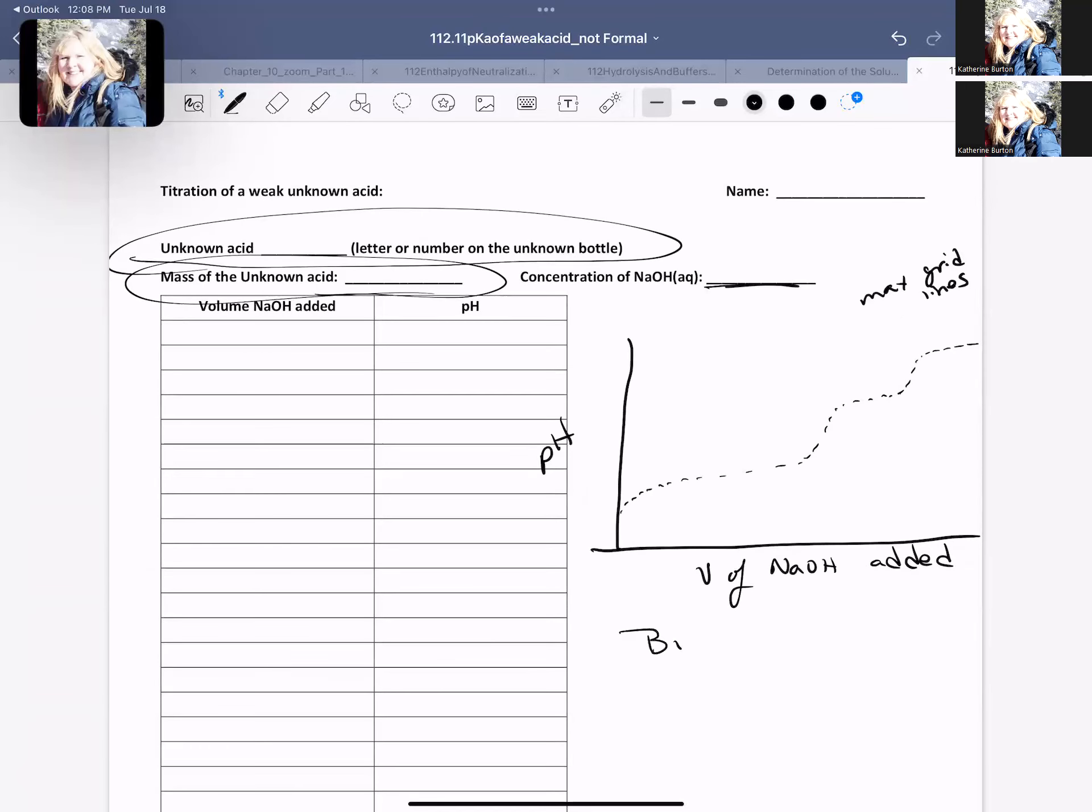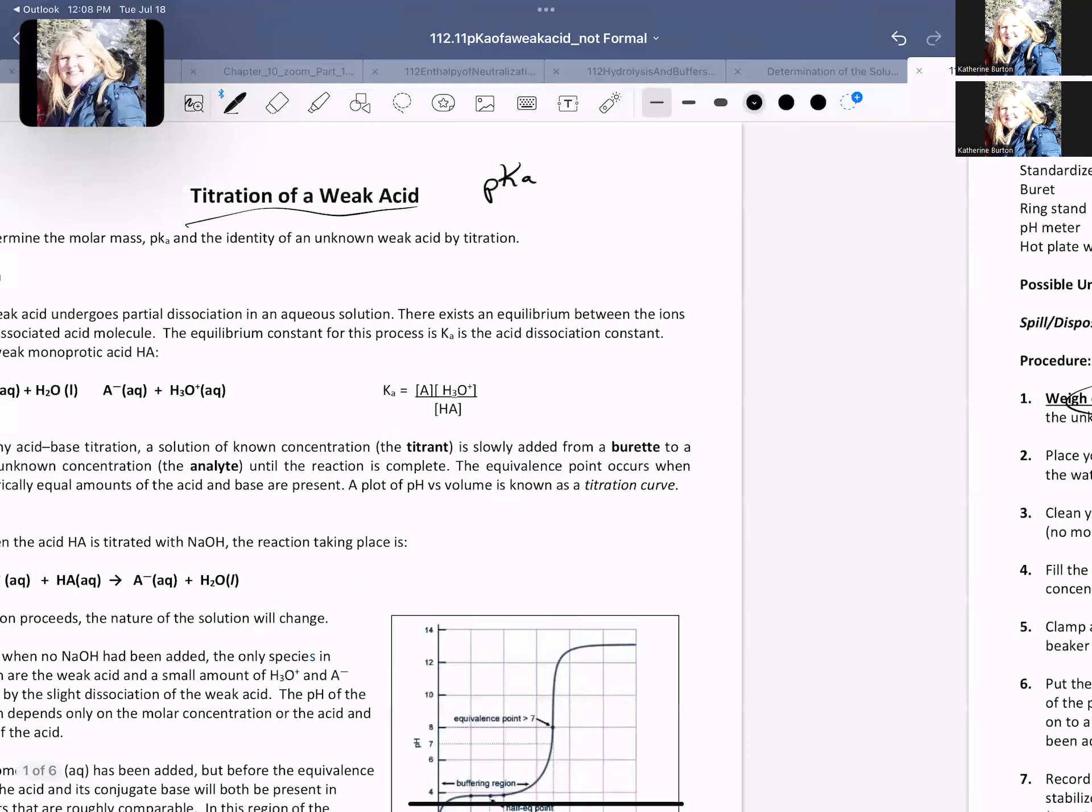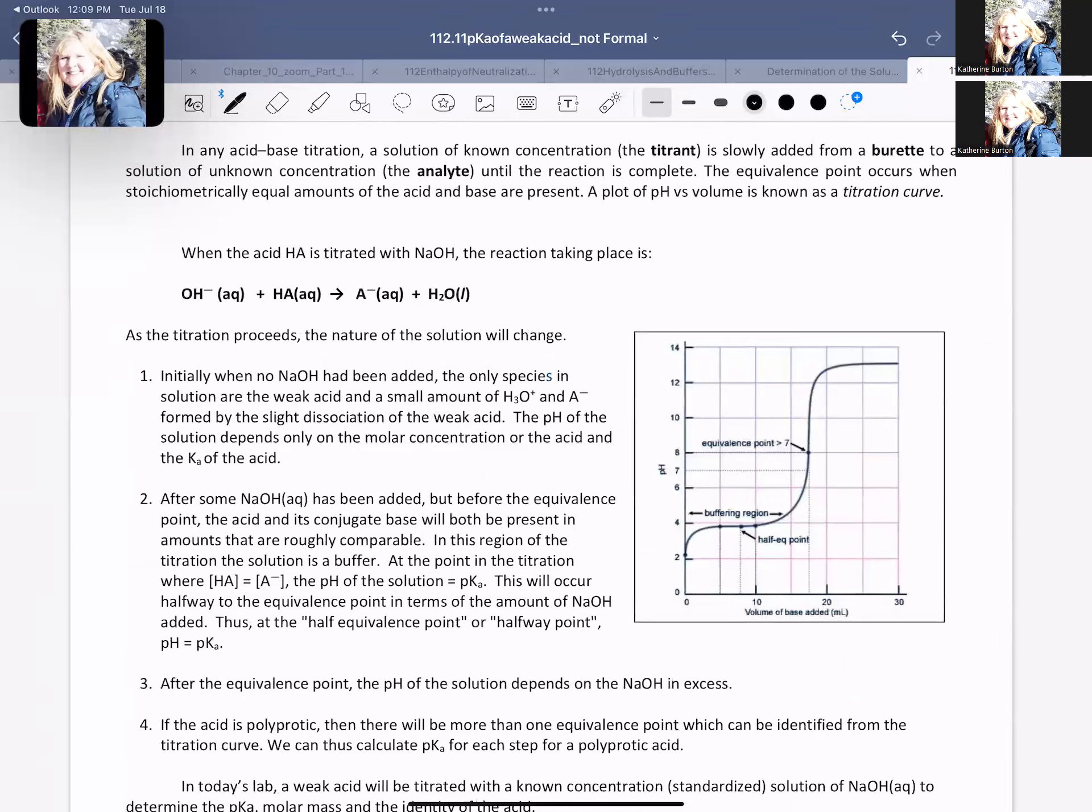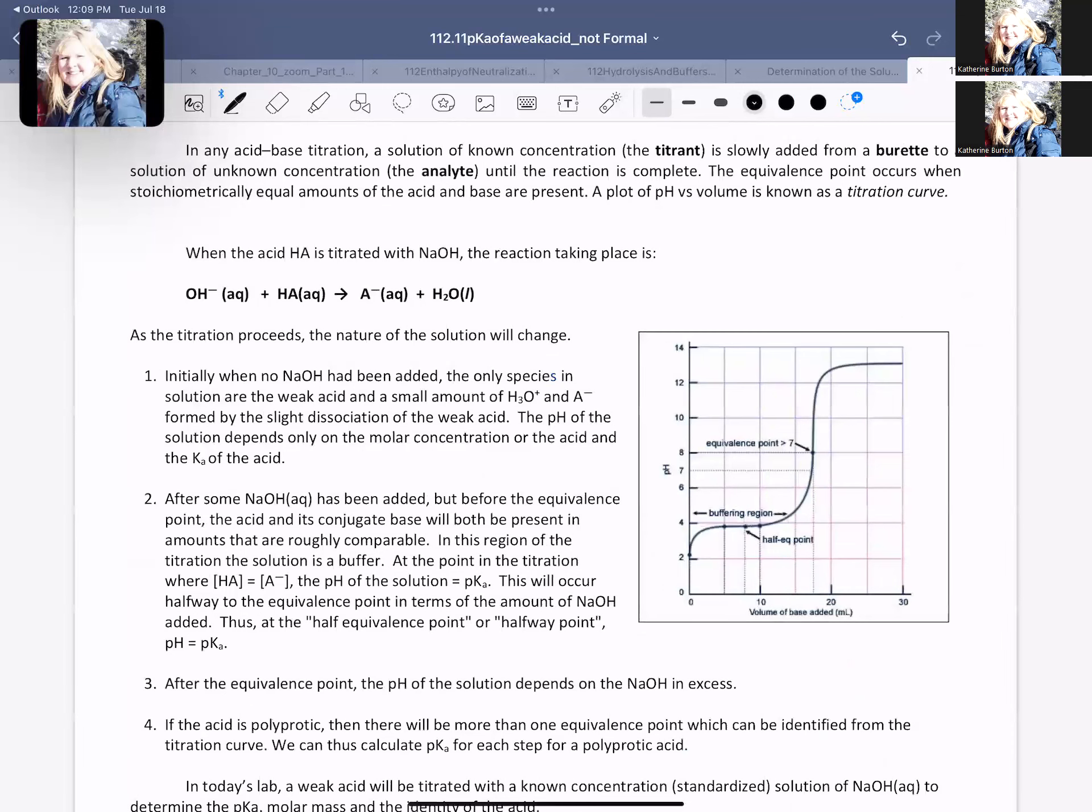If we have a buffer, we know that our equation for a buffer is pH is equal to pKa plus the log of the base over the acid. We know that if we are looking at a titration here where we're adding a strong to a weak, what we're going to have on our strong to a weak is we're going to have a couple of relevant things.